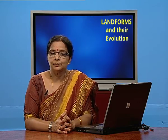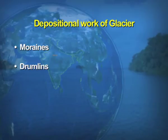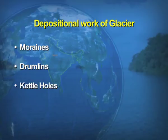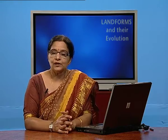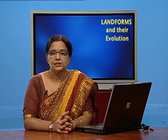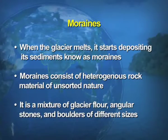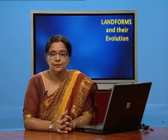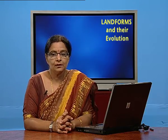Now we talk about the depositional work of the glacier. Moraines, drumlins, and kettle holes are features formed by the depositional work of the glacier. Deposition takes place after the melting of the glacier. When the glacier melts, it starts depositing its sediments known as moraine. Moraines consist of heterogeneous rock material — including material from the glacier floor, angular stones, or boulders of different sizes.